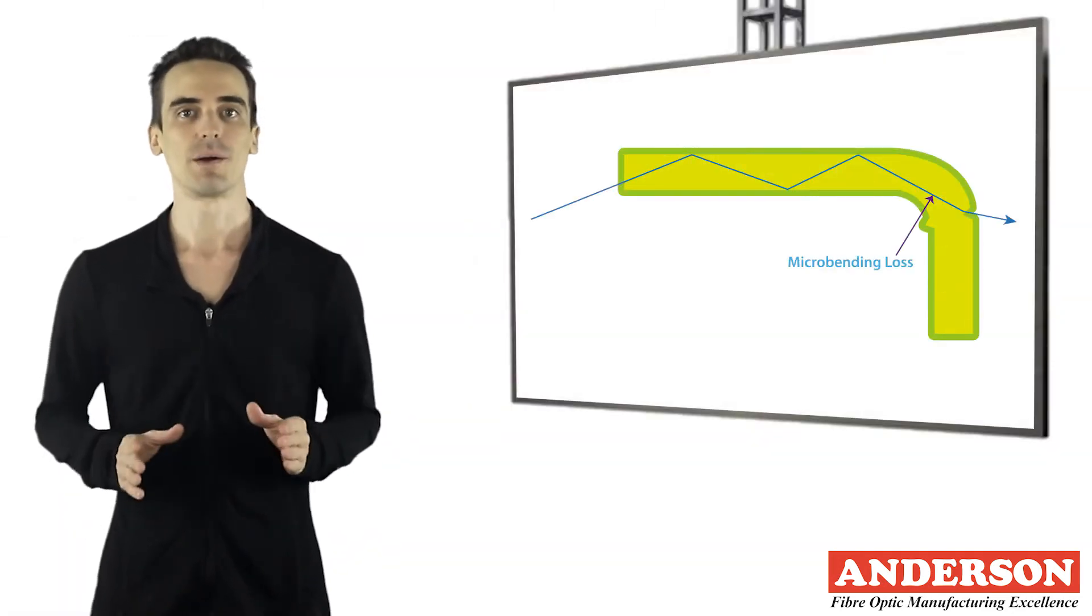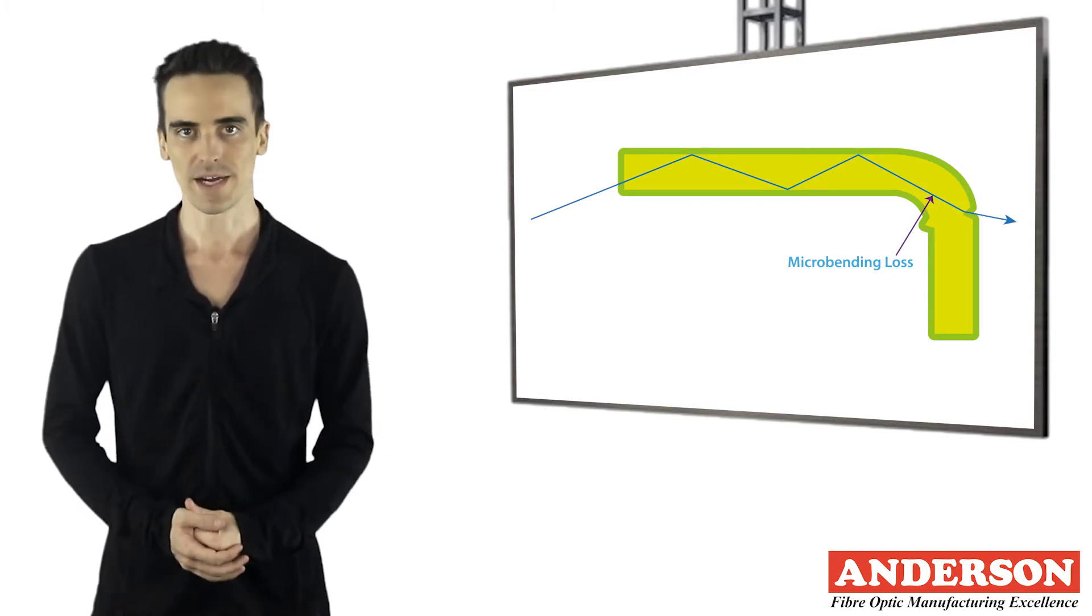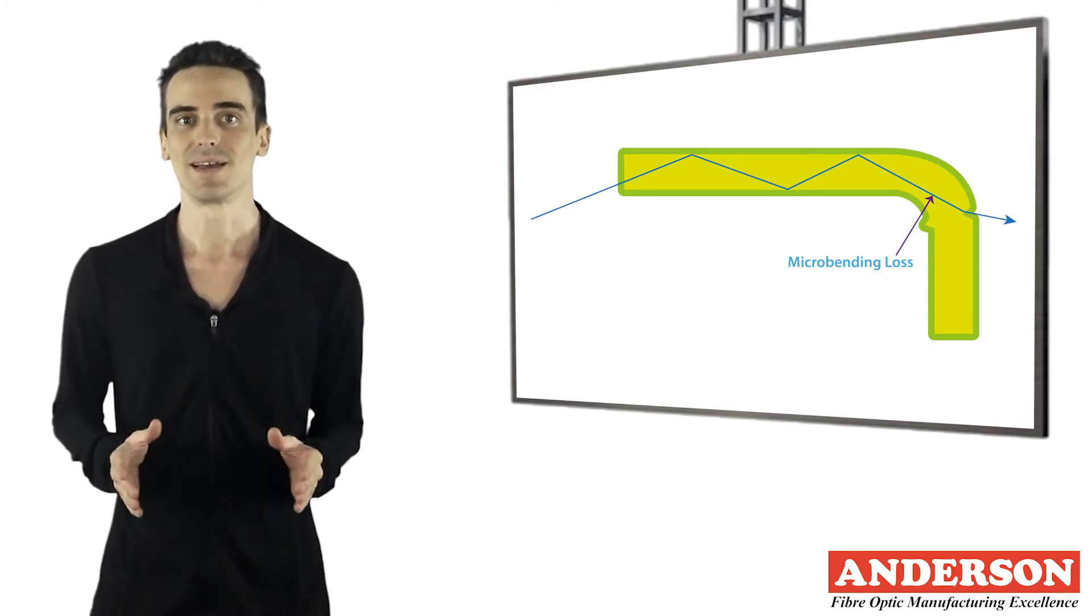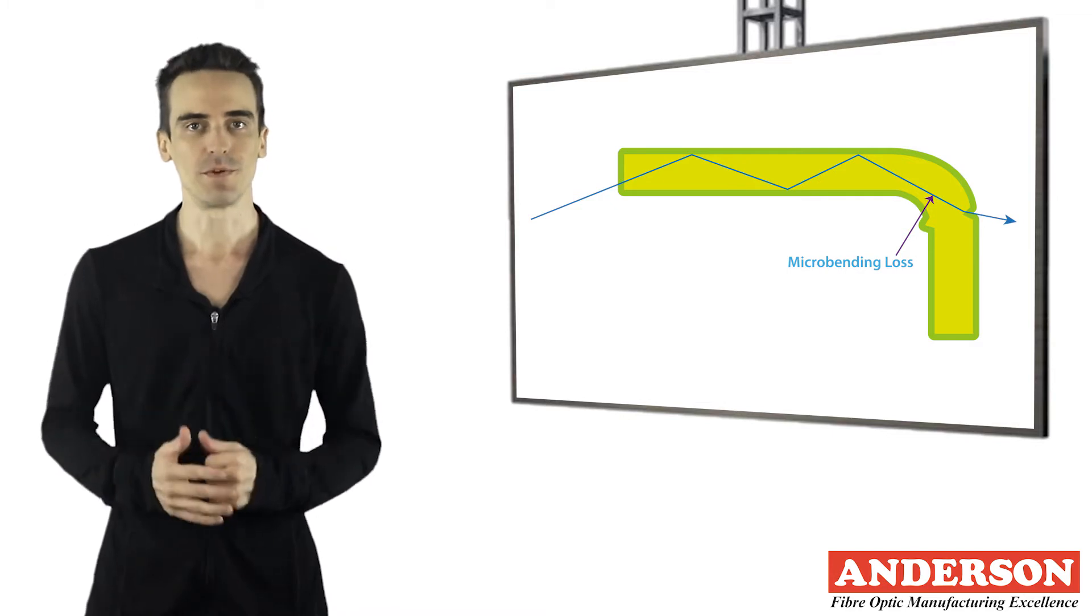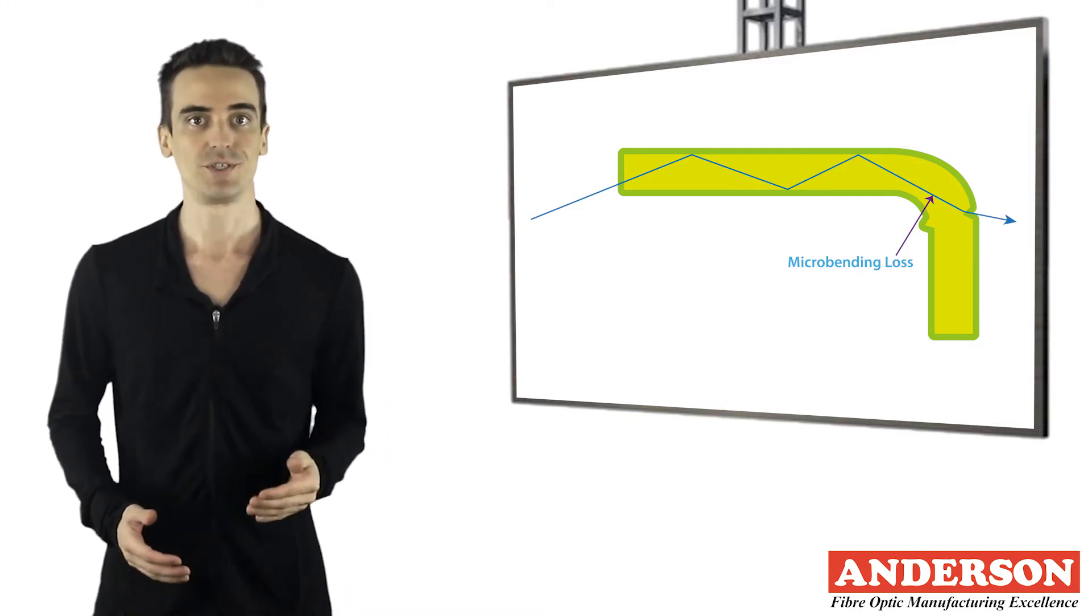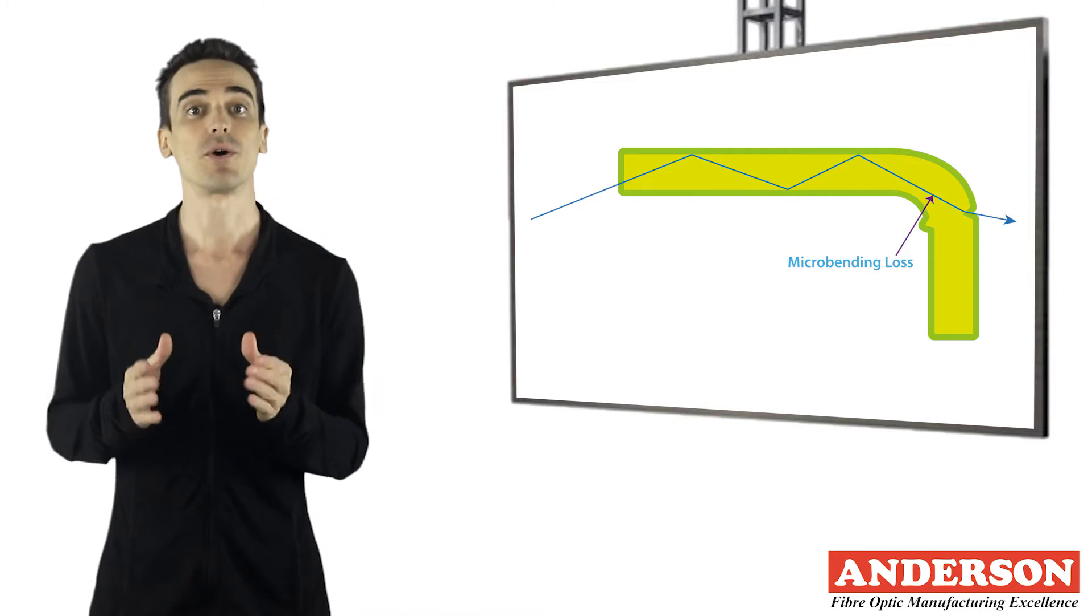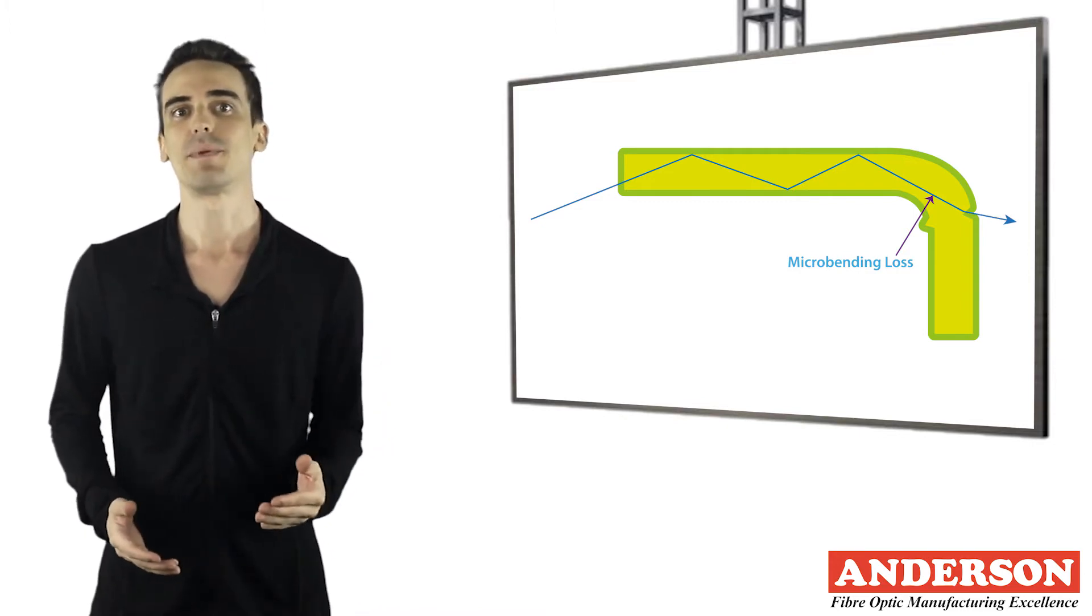Micro bending is an imperfection in the optical fiber created during manufacturing. Unlike macro bending, the imperfection may not always be visible. This is a small-scale distortion, generally indicative of pressure on the fiber.